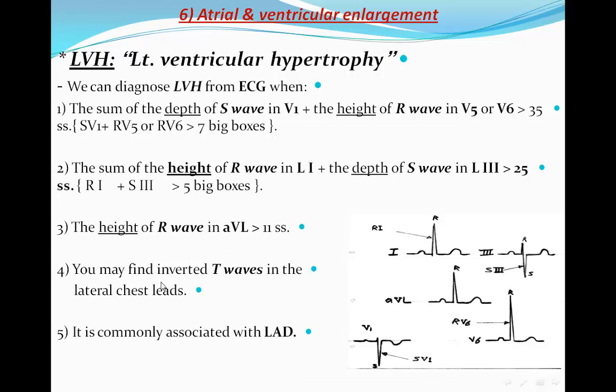We may also find inverted T waves in the lateral chest leads; in this case we call it LVH with strain. LVH is commonly associated with left axis deviation.